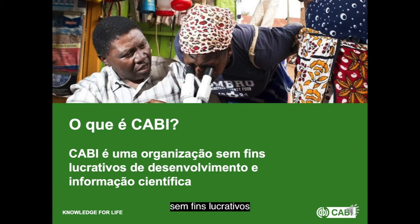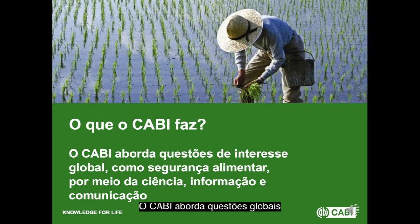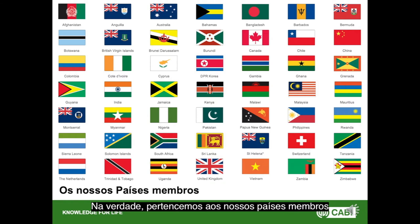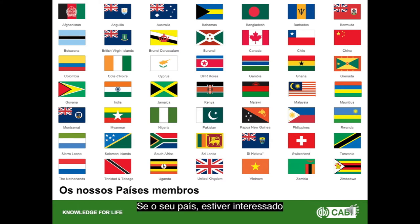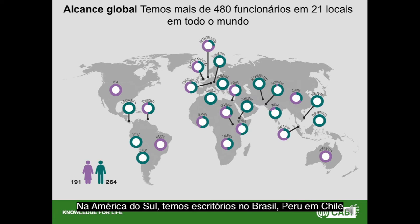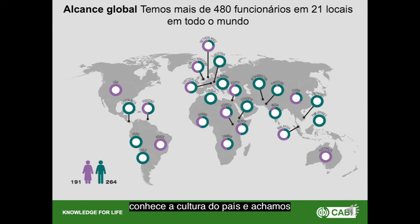CABI is an intergovernmental not-for-profit organization based on science and information. We address global issues such as food security, climate change, and gender issues, but on a local scale. CABI is quite unique — we are owned by our member countries, of which Chile and Colombia are members within South America. Although relatively small with just under 500 staff globally, we're situated across 21 locations, including Brazil, Peru, and Chile in South America.